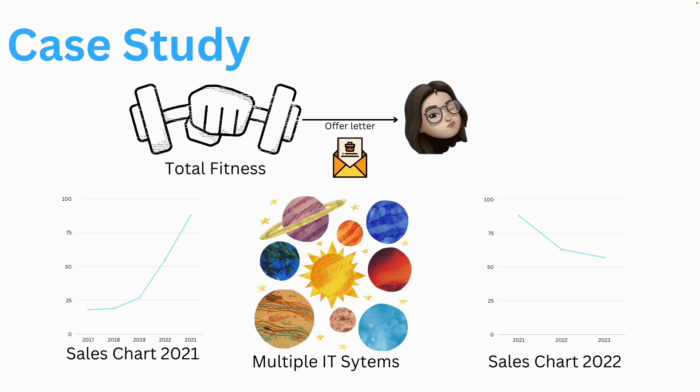The company also faced challenges integrating new technologies and systems as the business grew, and hence they were losing customers. But before the company completely shut off its operations, Ishmé from Between Two Meals stood up to the task of literally saving the company. She explained to the company the power of integration and automation, and introduced them to an iPaaS — and the iPaaS she introduced was MuleSoft.